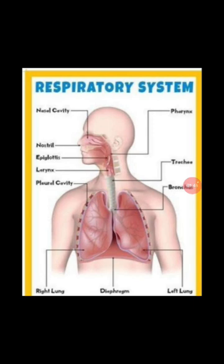Followed by the pharynx is the larynx, the voice box. The air passes through a four-inch long tube-like structure called the trachea, also commonly referred to as the windpipe. There are many tree-shaped cartilaginous rings present on the trachea. The function of these rings is to prevent the windpipe from collapsing.